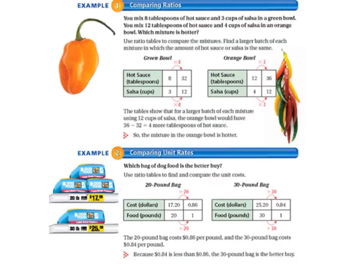Today we'll start working on page 212 in your math textbook. We'll start with Example 1, Comparing Ratios. You mix 8 tablespoons of hot sauce and 3 cups of salsa in a green bowl. You mix 12 tablespoons of hot sauce and 4 cups of salsa in an orange bowl. Which mixture is hotter?